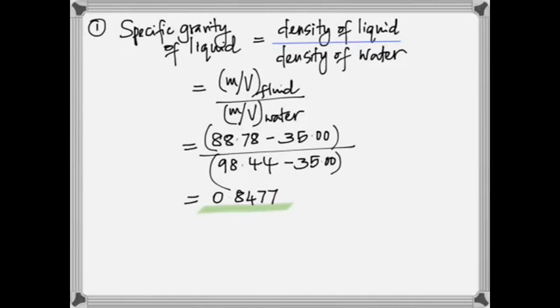So in this case, because the volume is the same, the volumes cancel and you get 0.8477. Because it's mass of something divided by mass of something, the masses cancel out, therefore there is no unit. Specific gravity has no unit.